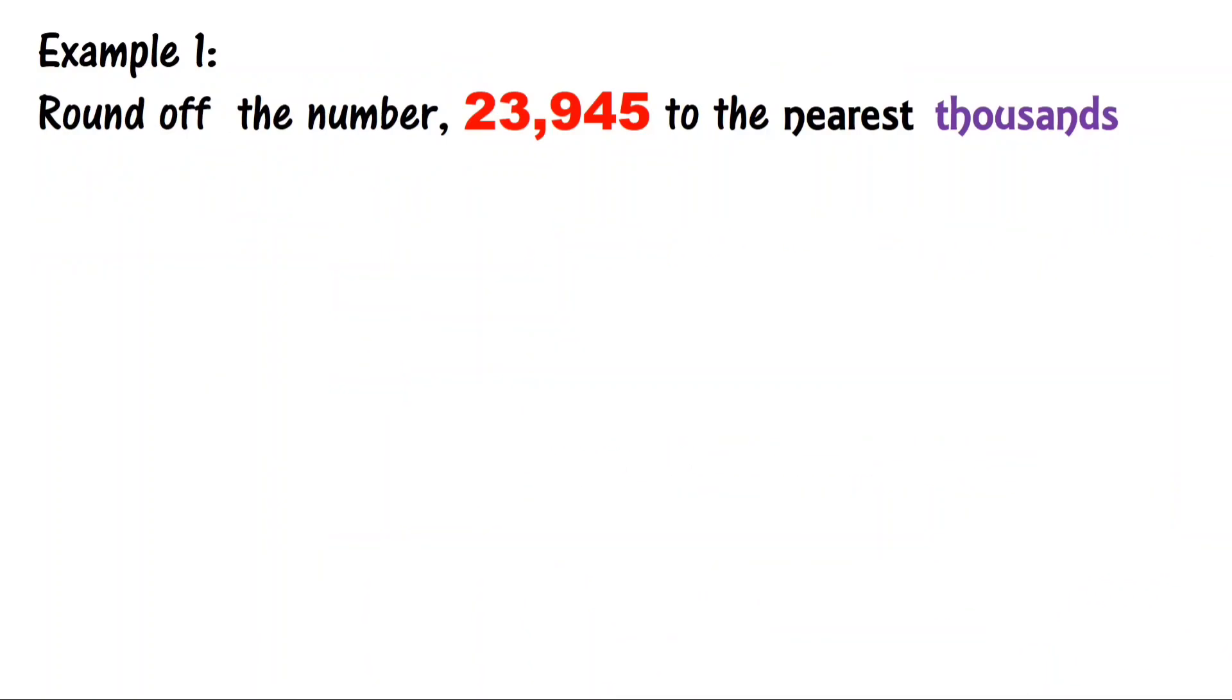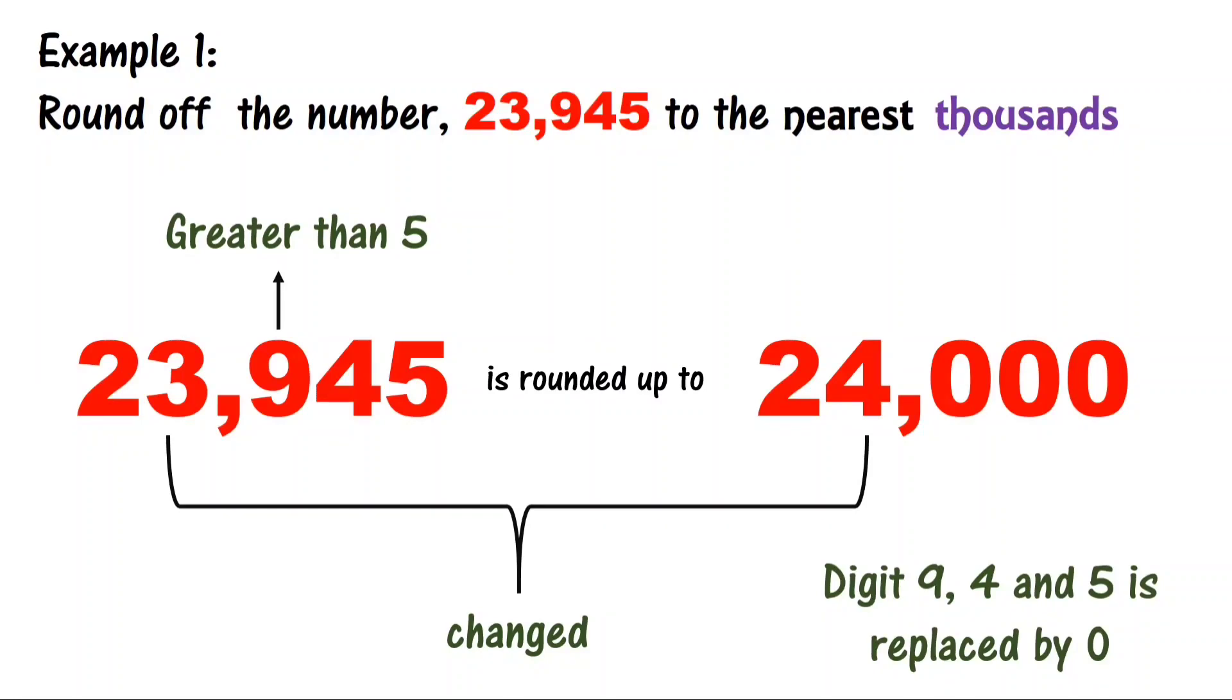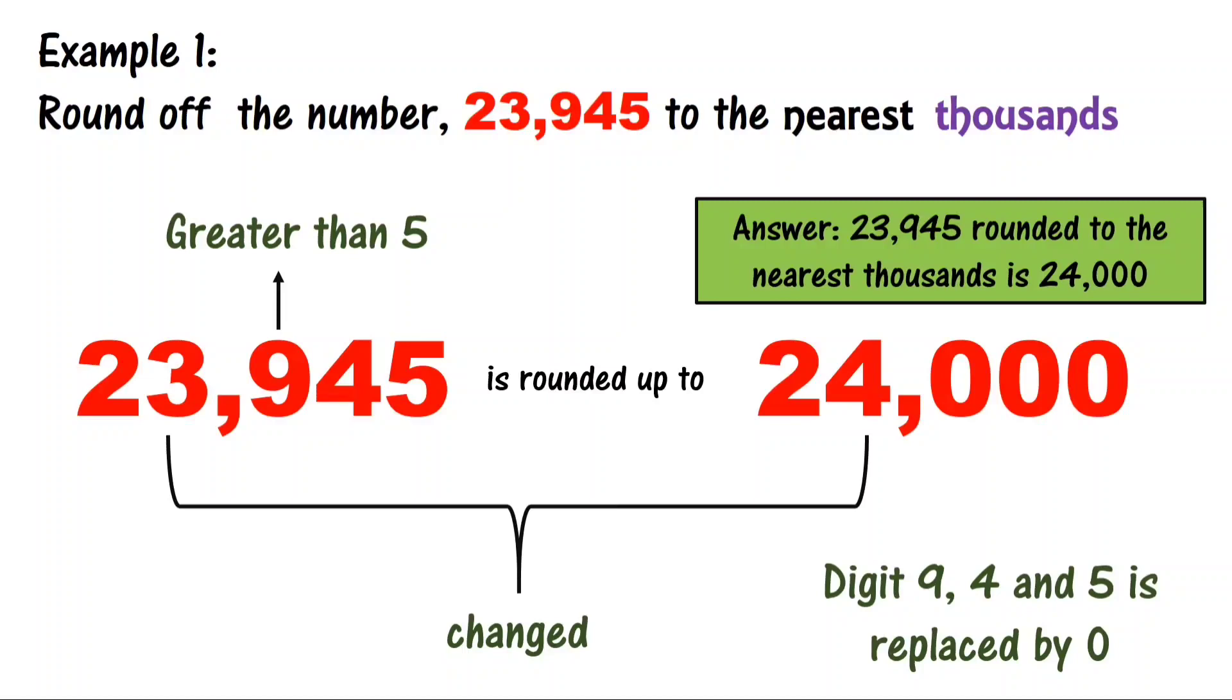Example number 1: Round off the number 23,945 to the nearest thousands. 23,945 is rounded up to 24,000. The place value of 3 is thousands and the place value of 9 is hundreds. 9 is greater than 5, that's why 3 will be increased by 1. 3 will change into 4. The digits 9, 4, and 5 are replaced by 0. So, 23,945 rounded to the nearest thousand is 24,000.